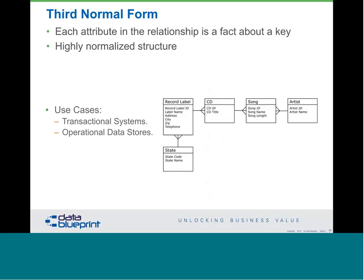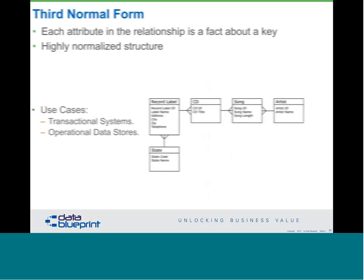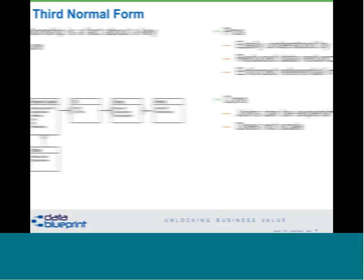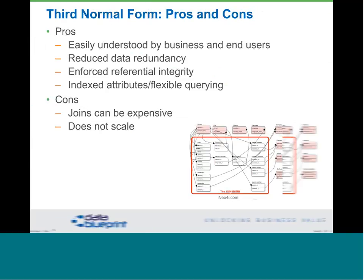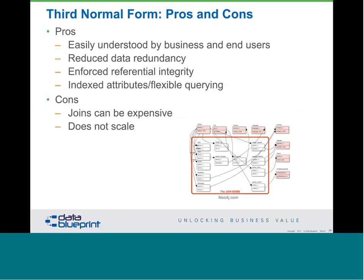Some of the pros of third normal form: it's easier to understand than some other models, particularly by business users. You get reduced data redundancy, enforcing referential integrity — though referential integrity is hit or miss in warehousing because some people turn it on and some turn it off. Indexing and improved performance are benefits. The cons: joins can be expensive in a third normal form because everything is so normalized out. It's hard to grab everything from different parts of the model and bring it back together. Because of that, it's hard to scale these models up.